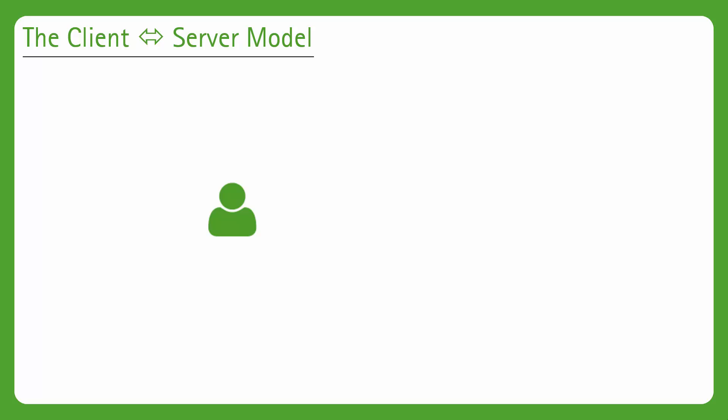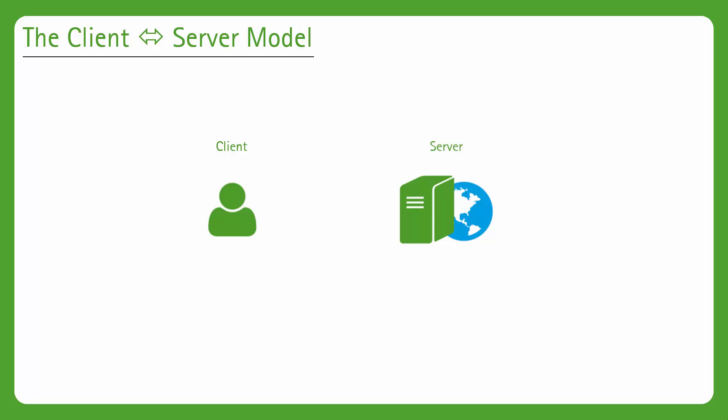These days software is often deployed in a client-server model, a classic example being a website that you may visit through your browser. The following is an example of what a typical client-server setup looks like. Bob here is the client. He wants to search for something on Google. When Bob types in the URL to Google in his browser's address bar, an HTTP request is made. That HTTP request is picked up by a server that Google operates and maintains.